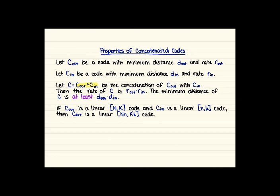Furthermore, if we're looking at two linear codes here, if Cout is a linear [N,K] code and Cin is a linear [n,k] code lowercase, then C the concatenation is a linear [Nn,Kk] code.